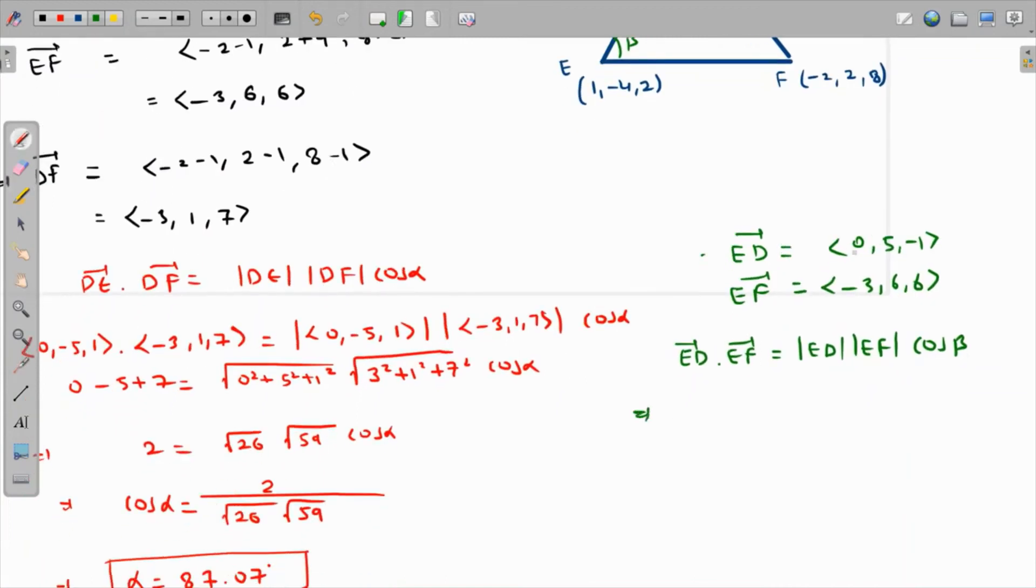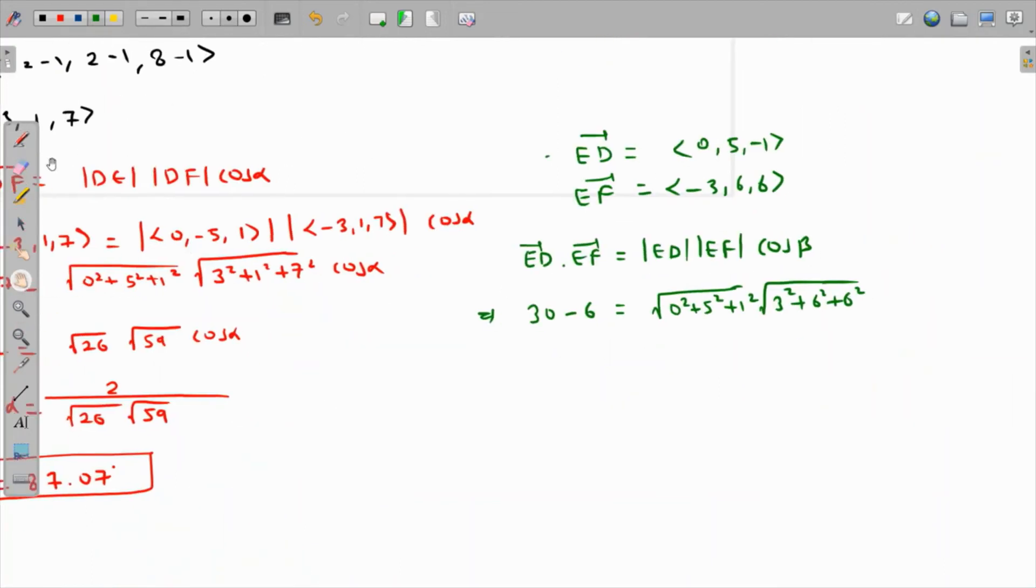ED dot EF is 0, 6 times 5 is 30, and this is -6. ED is root of 0 squared plus 5 squared plus 1 squared. This will be root of 3 squared plus 6 squared plus 6 squared times cosine of beta. 30 minus 6 is 24, this becomes root of 26, this becomes root of 36 plus 36 plus 9, which is root of 81.